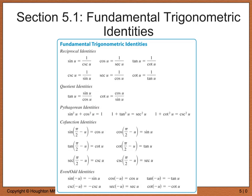Pythagorean identities are really important. Sine squared plus cosine squared equals 1, and 1 plus tan squared equals secant squared. These are going to help you out tremendously. These two are very similar, so I personally memorize sine squared plus cosine squared equals 1, and know I can get the others from it. The third one is 1 plus cotangent squared equals cosecant squared.